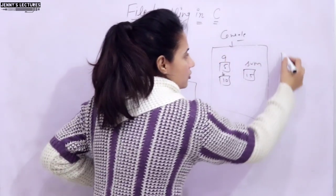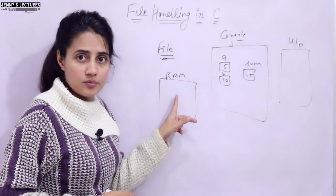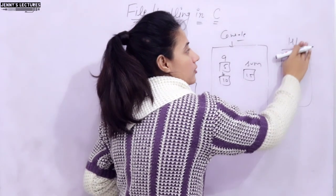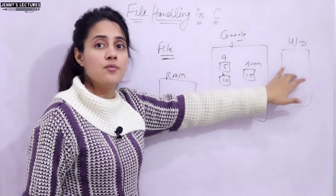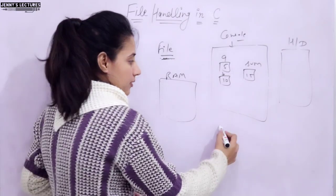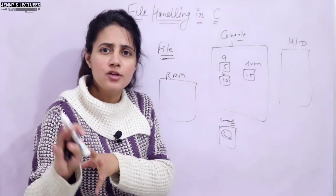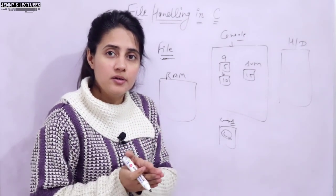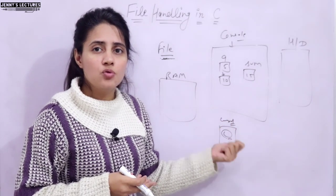RAM is volatile memory — whatever is in RAM, if you switch off your computer, that data is gone. Hard disk, on the other hand, is non-volatile or permanent memory. Anything stored there remains even after you switch off and turn on your computer again. For example, Word documents, images, downloaded files — all of that is stored in the hard disk as permanent storage.